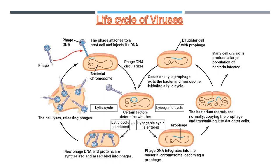Next, the virus takes control of the host cell's replication mechanisms. It is at this stage that a distinction between susceptibility and permissibility of a host cell is made. After a virus has made many copies of itself, the progeny may begin to leave the cell by several methods. This is called shedding and is the final stage in the viral life cycle.